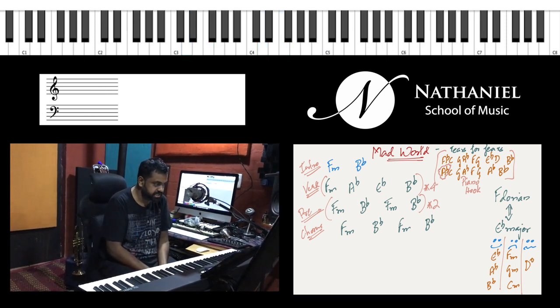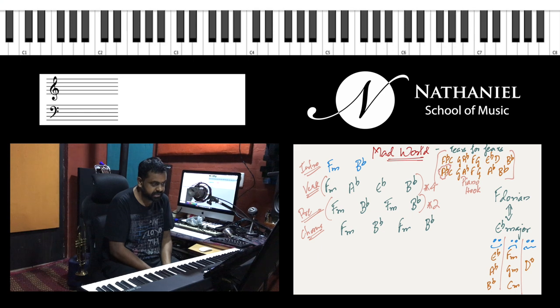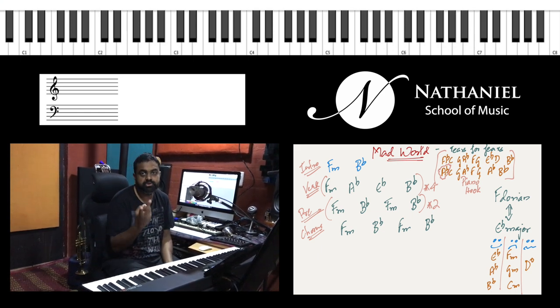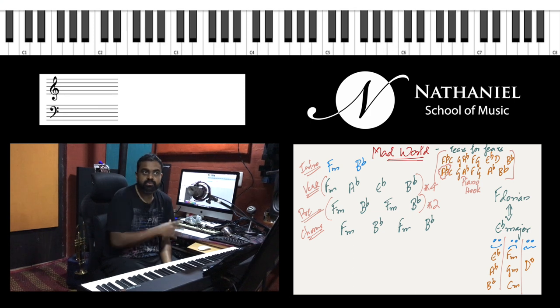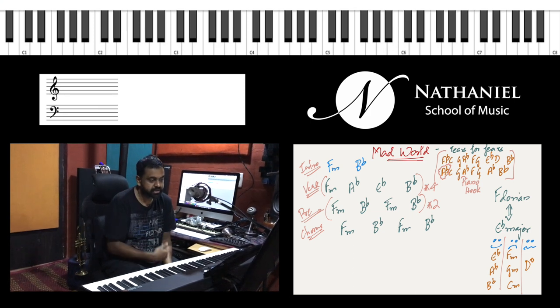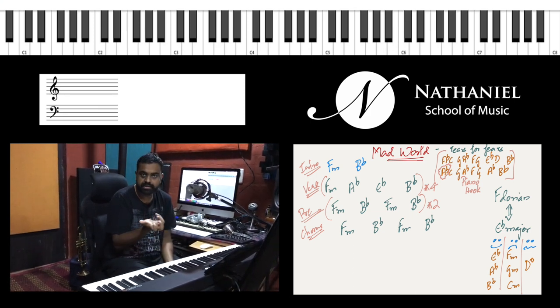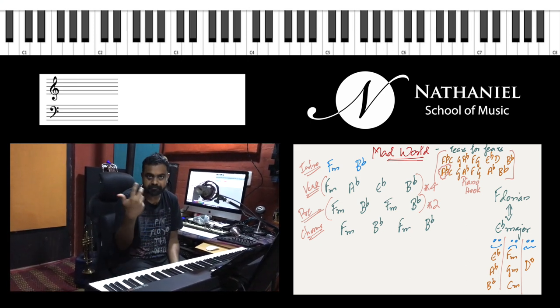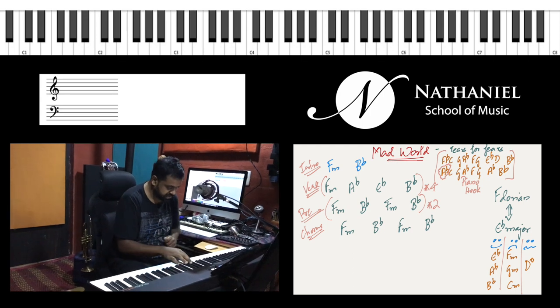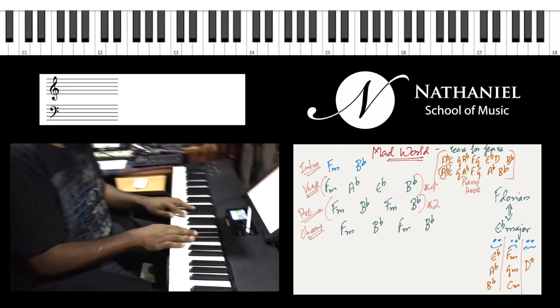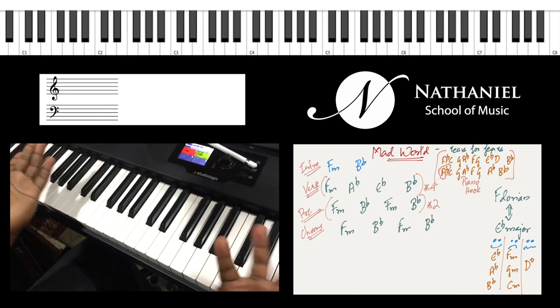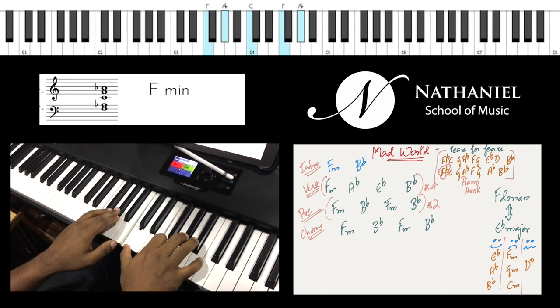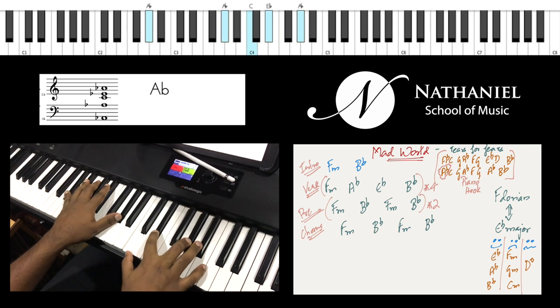So let's get into each section of the song. There are in total 4 sections but actually 2 unique chord progressions. So once you learn both the unique chord progressions, we'll also do the guitar and the piano hook which happens a lot in the song. So let's get started with the verse: all around me are familiar places.